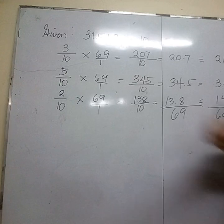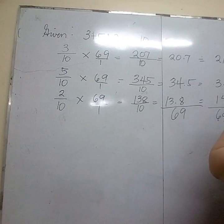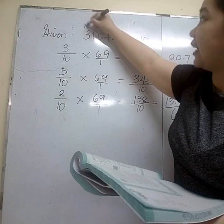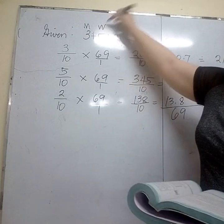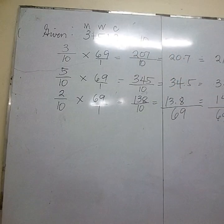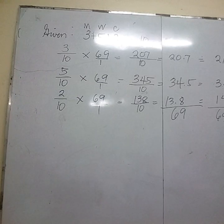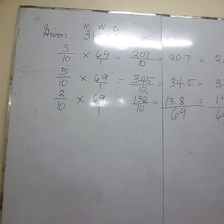What are the ratios referring to? The 3 represents men. The 5 represents women. And the 2 represents children. So there are 21 men, 34 women, and 14 children. That is how you answer — include the label.